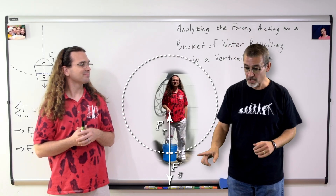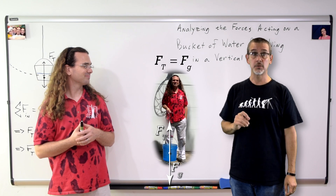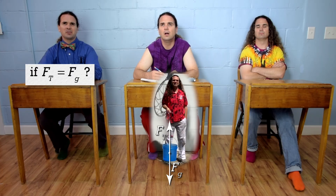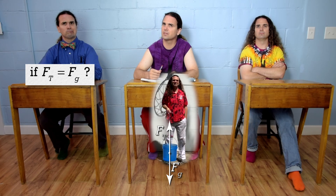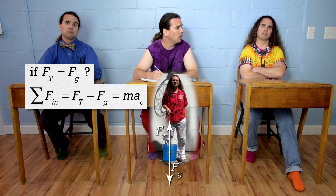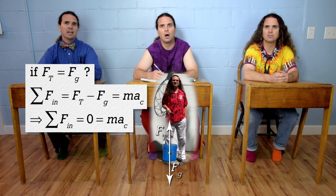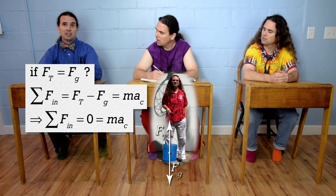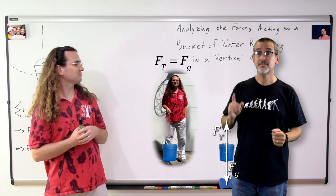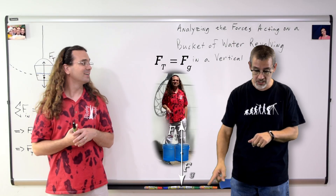Okay, imagine if, as the bucket moved along the bottom of the circle, the force of tension and the force of gravity suddenly became equal in magnitude. Billy, describe the motion of the bucket if they were equal. If the force of tension and the force of gravity were equal in magnitude, then the net force in the inward direction would equal zero, and then the centripetal acceleration would equal zero and the bucket would not move in a circle — it would continue in a straight line. Exactly. If the force of tension and the force of gravity were equal in magnitude, the bucket would have zero acceleration and would continue in a straight line.